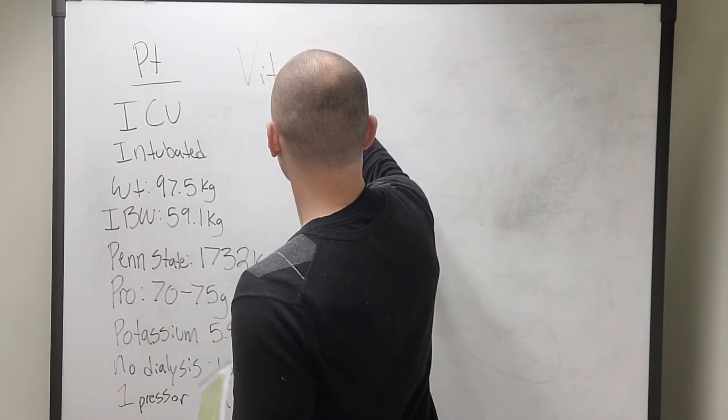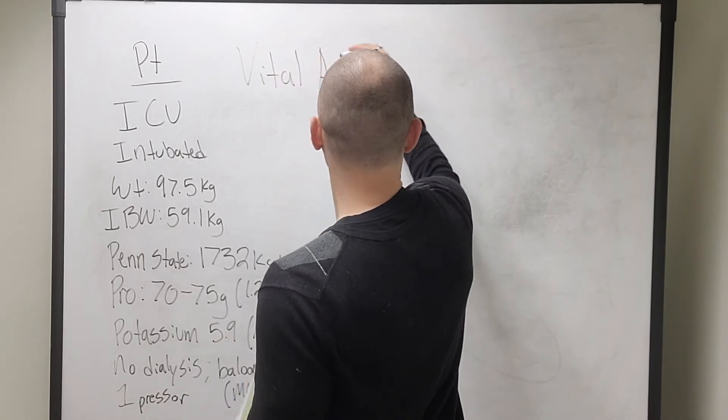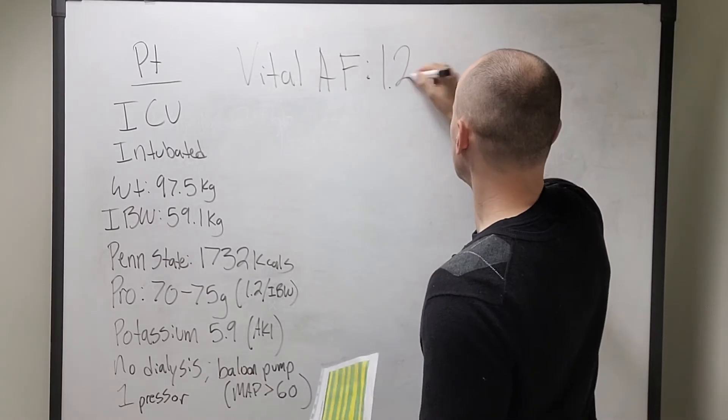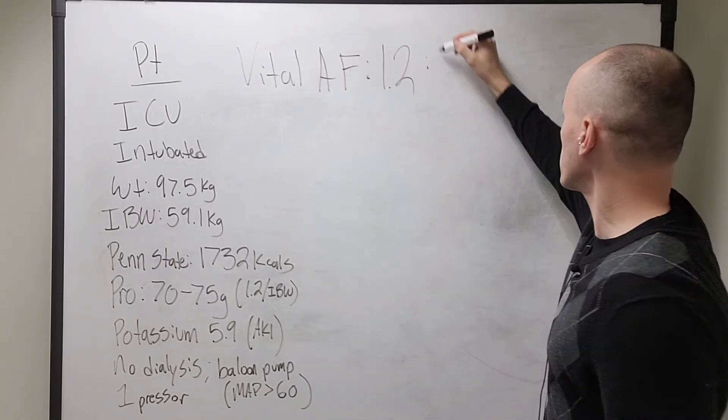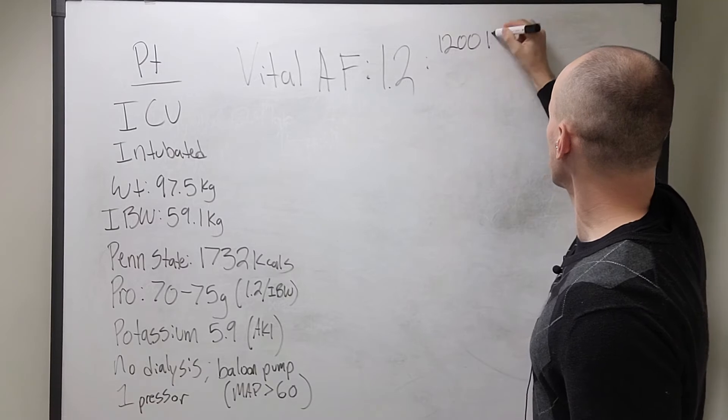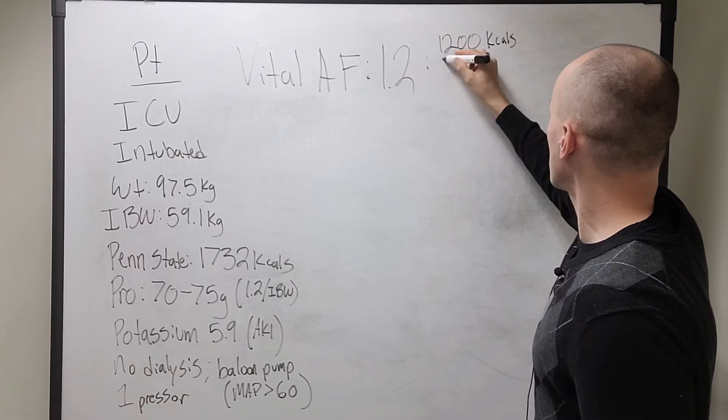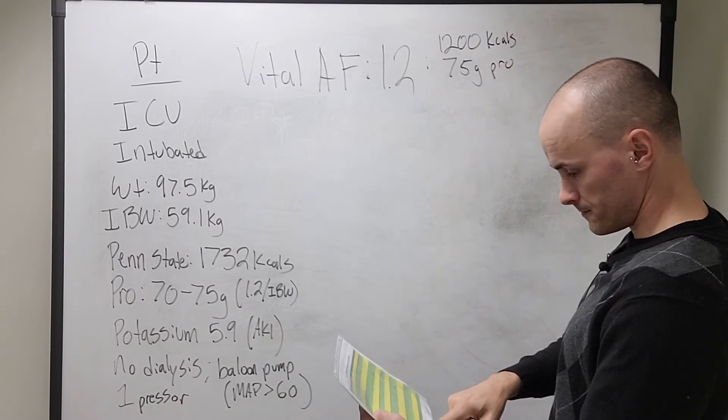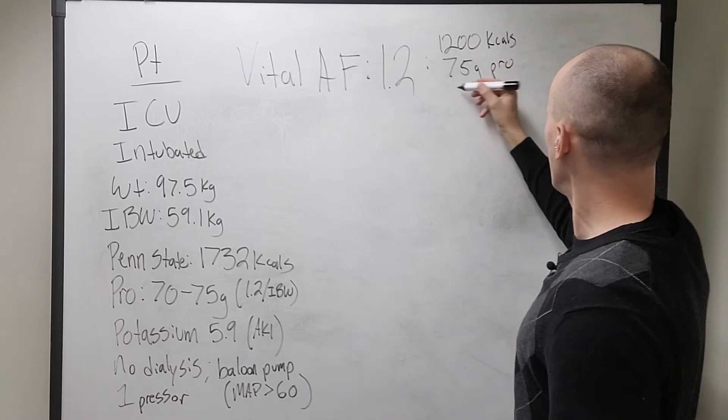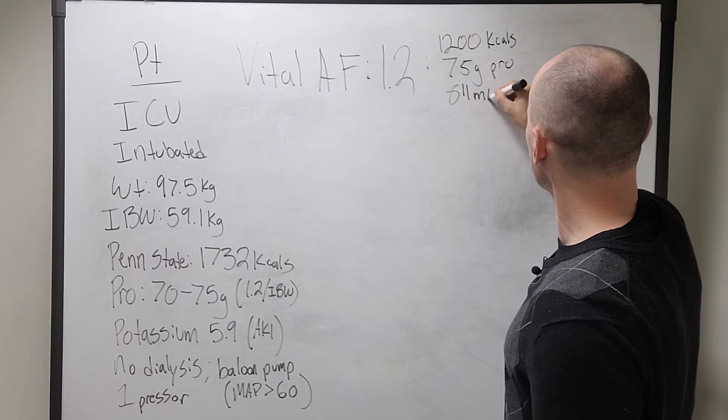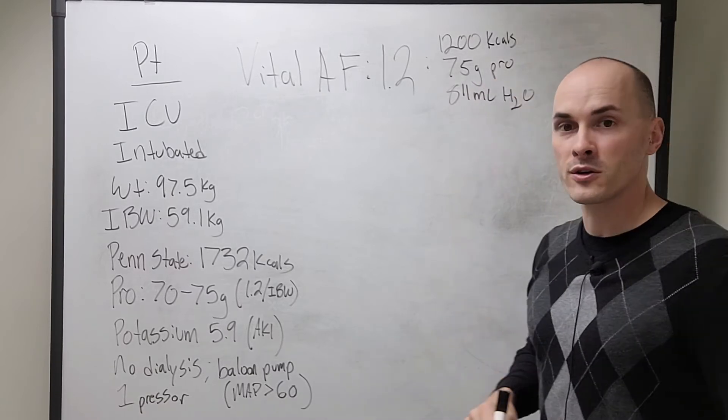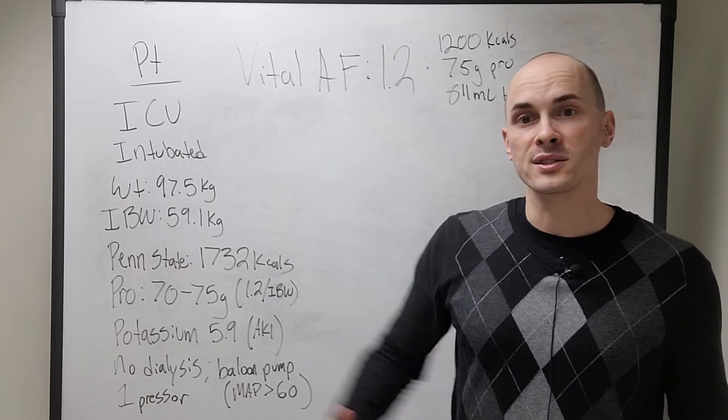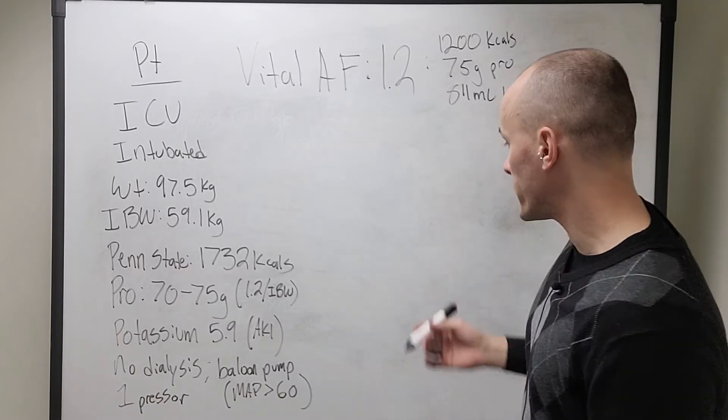We're going to take a look at Vital AF. This is a 1.2 cal formula, meaning for every liter it's got 1,200 kcal. It's got 75 grams of protein and 811 mils of free water. Let's go ahead and figure out what a volume-based tube feed would look like for this patient.